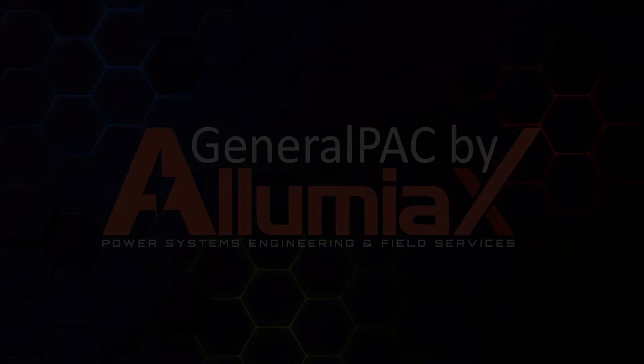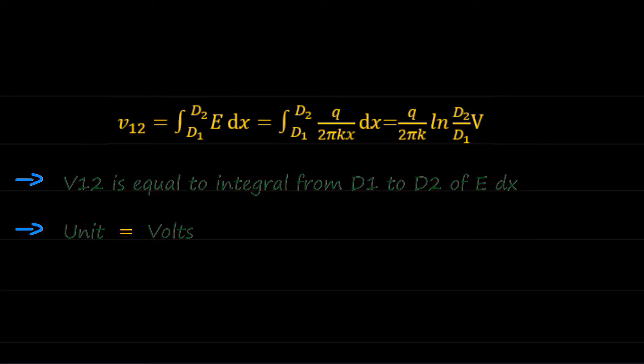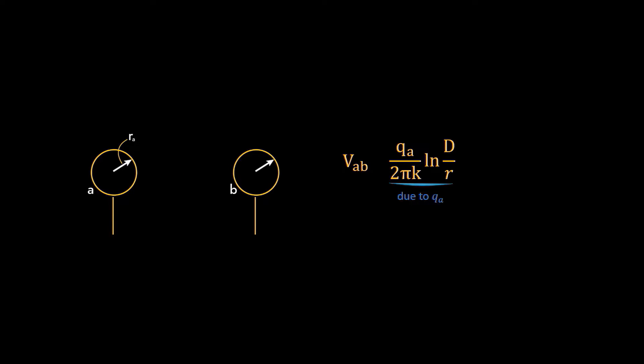V12 is equal to integral from d1 to d2 of e dx. After putting the value of e in the equation, it becomes integral from d1 to d2 of q over 2 times pi times k times x dx. On solving the integral, the final equation comes out as q over 2 times pi times k into natural log of d2 over d1 with unit volts. Now we know the voltage drop due to a single conductor, we can easily determine the total voltage drops due to both the conductors a and b having charges qa and qb respectively by the principle of superposition, which is to sum all the voltage drops to get the resultant.